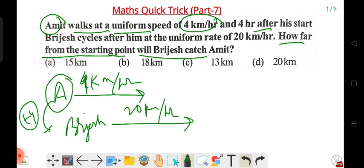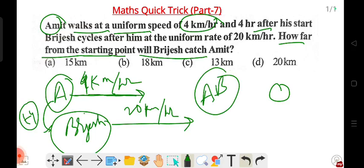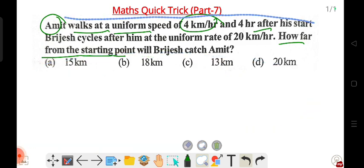Amit starts from the starting point. After some distance, Brijesh starts cycling at 20 km speed to catch Amit. At what distance from the starting point will Brijesh catch Amit? We need to determine this distance - the point where they meet.